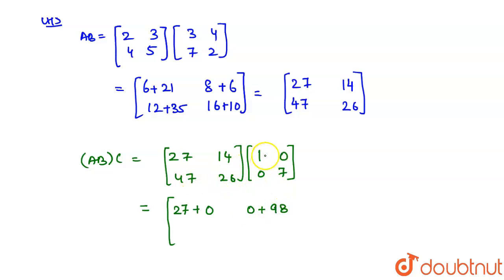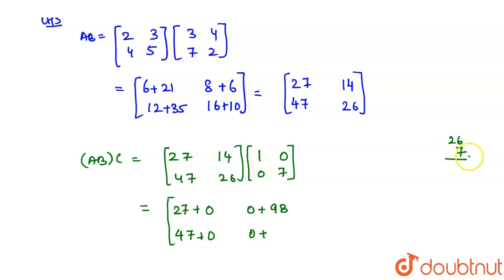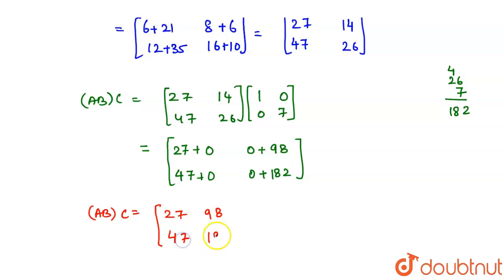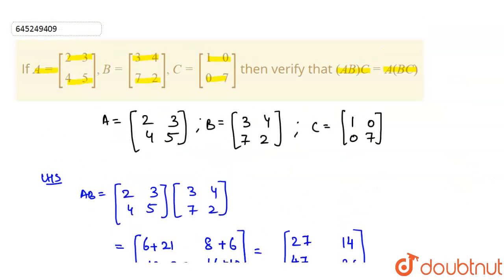Continuing: element (2,1) = 47×1 + 26×0 = 47. Element (2,2) = 47×0 + 26×7 = 182. So (AB)C equals [[27,98],[47,182]]. This is our LHS result.